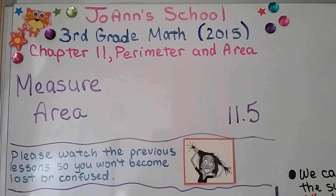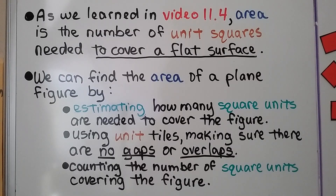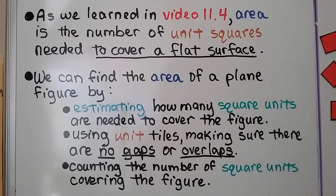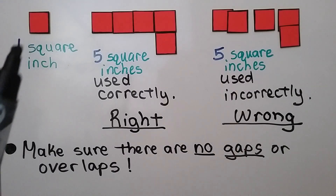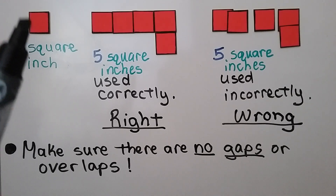Third grade math lesson 11.5: Measure Area. As we learned in video 11.4, area is the number of unit squares needed to cover a flat surface. That video is linked in the description if you haven't seen it. We can find the area of a plane figure by estimating how many square units are needed to cover the figure, using unit tiles, or counting the number of square units covering the figure. If this is one square inch, that means it's an inch on all sides.